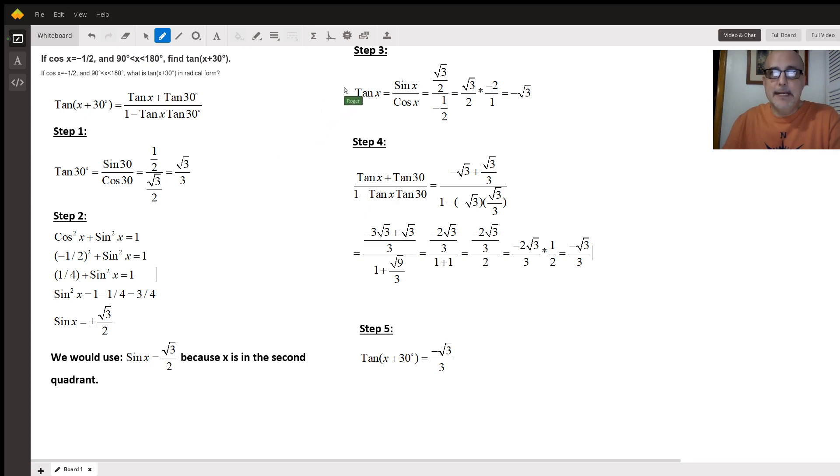Now step three, I need to find the tangent of x. Tangent of x in the second quadrant is negative so that's going to be the sine of x which is the square root of three over two, which we got from step two, and negative one half for cosine which we got from our given. If we solve that we get the tangent of x equals negative square root of three.